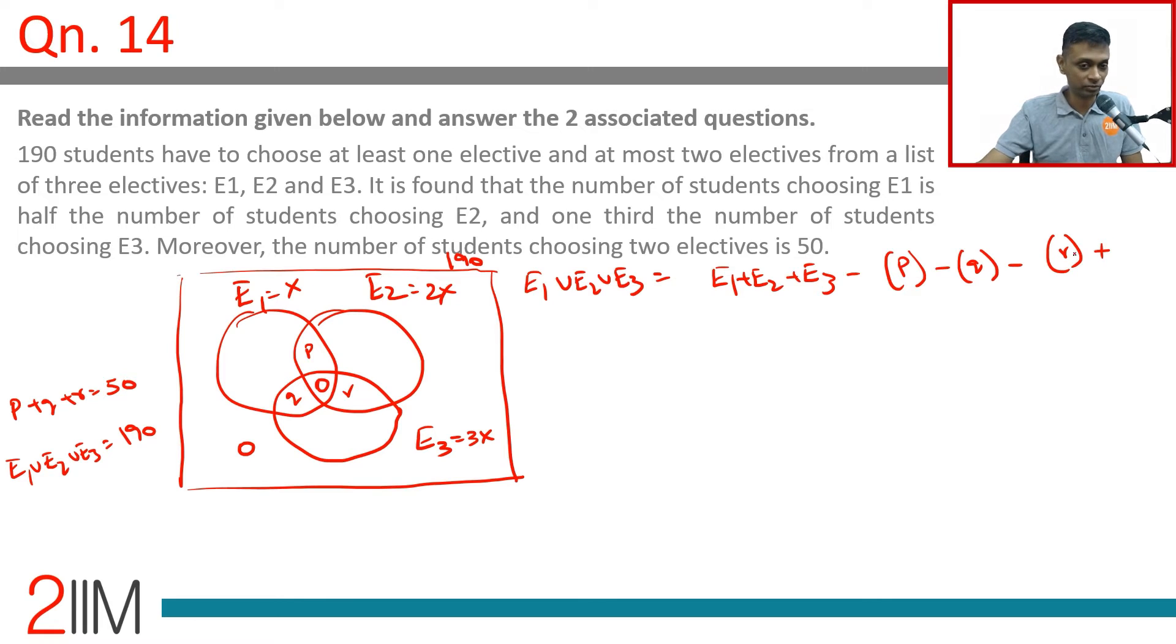That is nothing, so this is 190 equals x plus 2x plus 3x minus p plus q plus r. This is 6x. 190 equals 6x minus 50, or 6x is 240, x is 40.